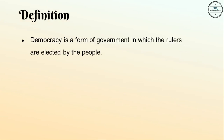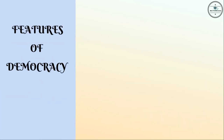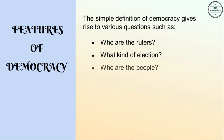Democracy is a form of government in which the rulers are elected by the people. The simple definition of democracy gives rise to various questions such as: who are the rulers, what kind of election, who are the people, and what kind of a form of government? Let's consider each of these questions with the help of some examples.